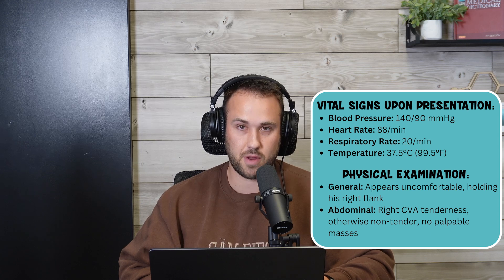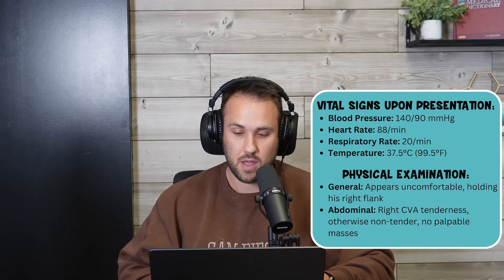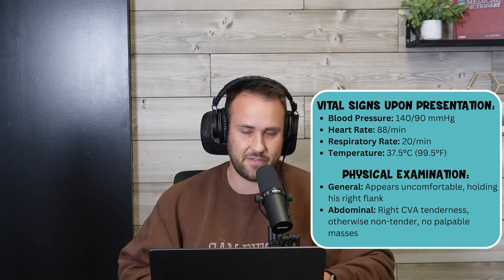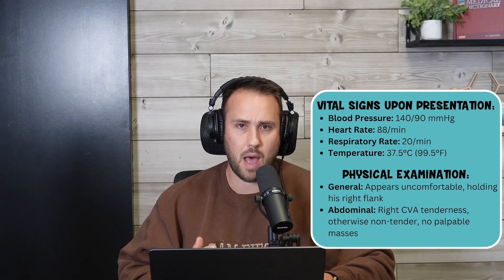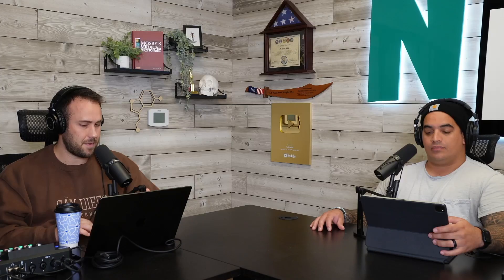Vitals: blood pressure 140/90, heart rate 88, respirations 20, temp 99.5. He appears uncomfortable, holding his right flank. Abdominal exam shows right CVA tenderness; otherwise non-tender with no palpable masses. When I see flank pain and blood in the urine, I get nervous about nephrolithiasis — that's on my differential. The other thing I'm thinking about, which is not too rare, is renal papillary necrosis. You can see renal papillary necrosis with chronic NSAID use and with poorly controlled diabetes mellitus.